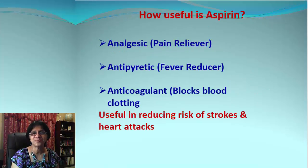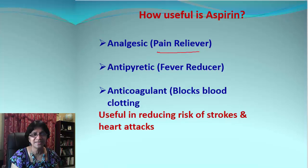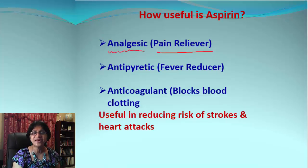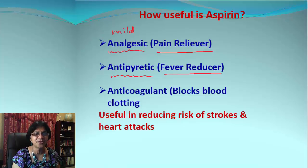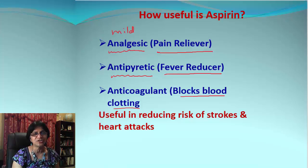How useful is aspirin? It is such a simple medicine used for many different reasons. First, it is a pain reliever — the medicinal term is analgesic — though it is a mild analgesic. Second, it reduces fever, which is called its antipyretic property. Third, and very importantly, aspirin can prevent blood clotting, making it an anticoagulant. Many strokes or heart attacks are caused by sudden clot formation, so aspirin is prescribed in smaller doses for many heart patients to prevent strokes or heart attacks.